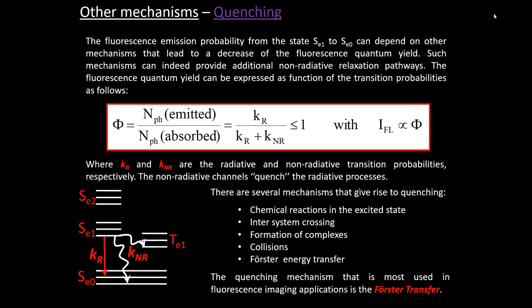The molecule has a probability to relax by emitting energy — this is k sub r. We can show that the fluorescence quantum yield, which is the number of photons emitted divided by the number of photons absorbed, can be written as the ratio of the radiative probability divided by the sum of all probabilities.